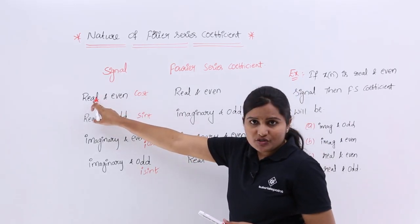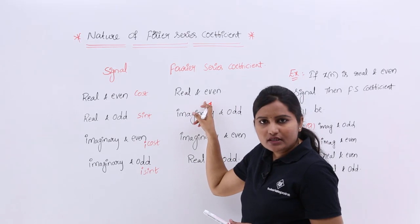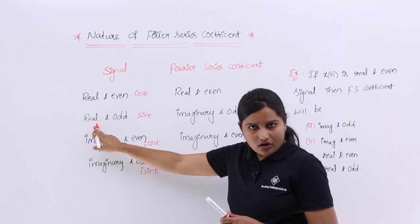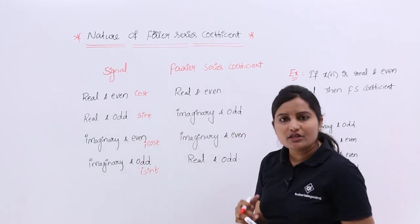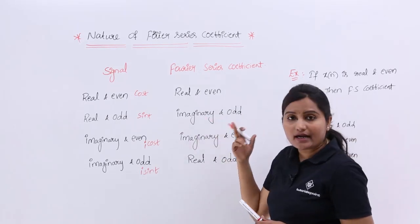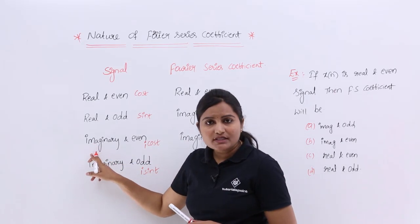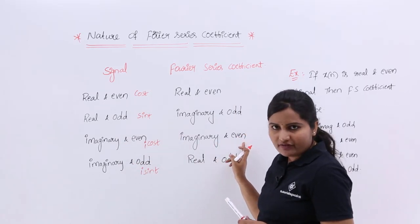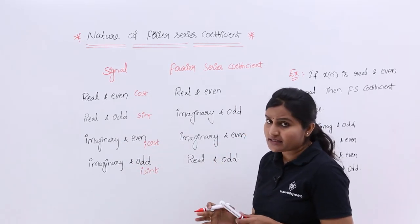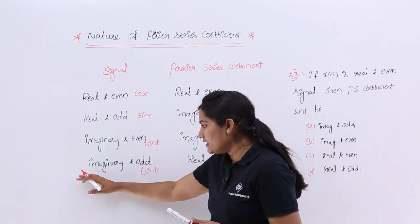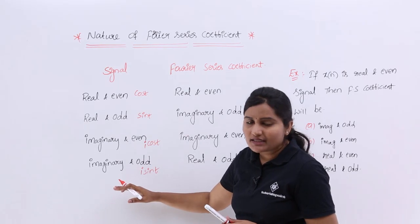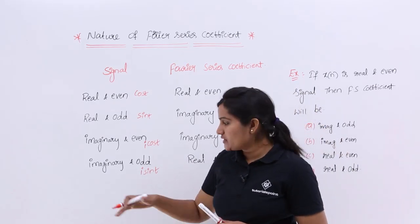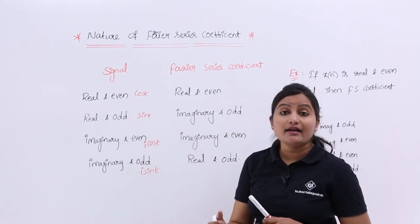If the signal is real and even, the Fourier series coefficient is also real and even. If the signal is real and odd, this 'odd' changes 'real' to 'imaginary', so the Fourier series coefficient becomes imaginary and odd. If the signal is imaginary and even, 'even' won't change anything, so you get imaginary and even in the Fourier series coefficient as well. If the signal is imaginary and odd, this 'odd' changes 'imaginary' to 'real', so the Fourier series coefficient becomes real and odd.